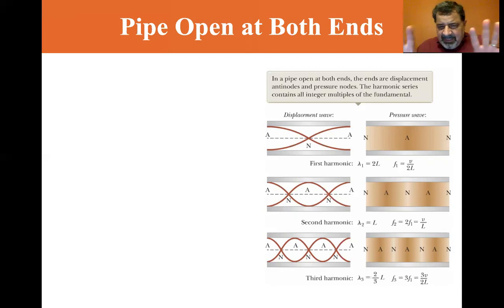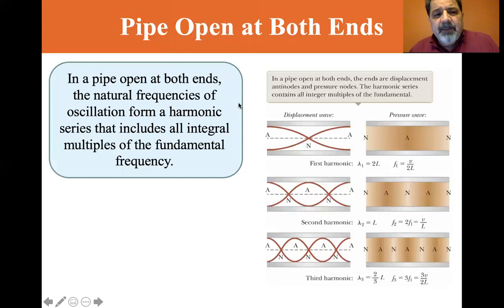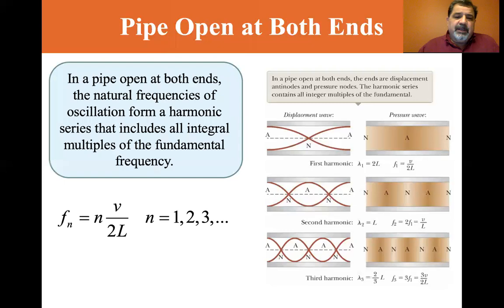This one has three antinodes, and here the third harmonic has three nodes but four antinodes. So in a pipe open at both ends, the natural frequencies of oscillation form a harmonic series that includes all integral multiples of the fundamental frequency.